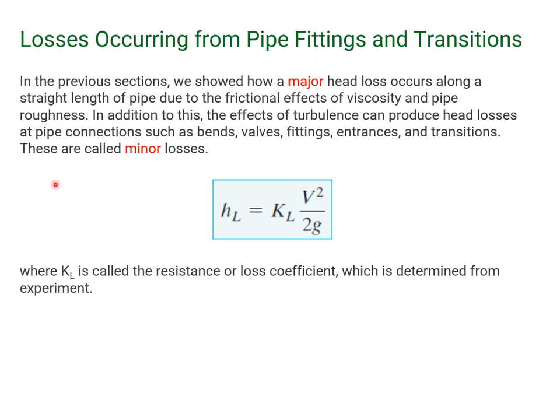In addition to this, the effects of turbulence can also produce head losses at pipe connections such as bends, valves, fittings, entrances, and transitions. These are called minor losses.